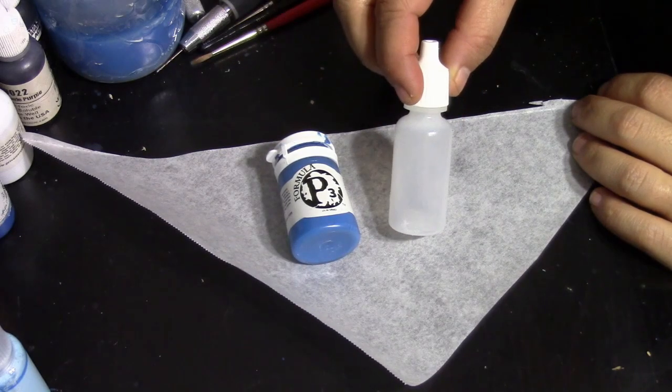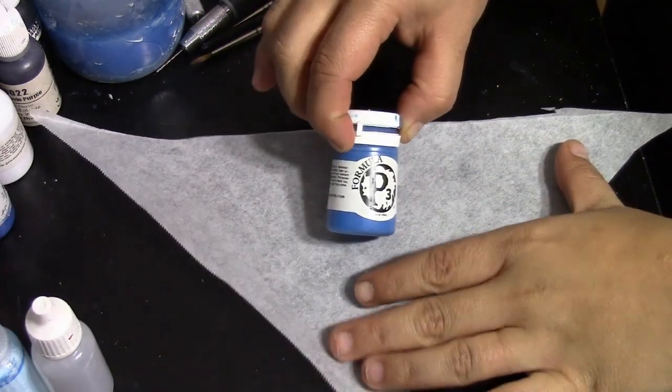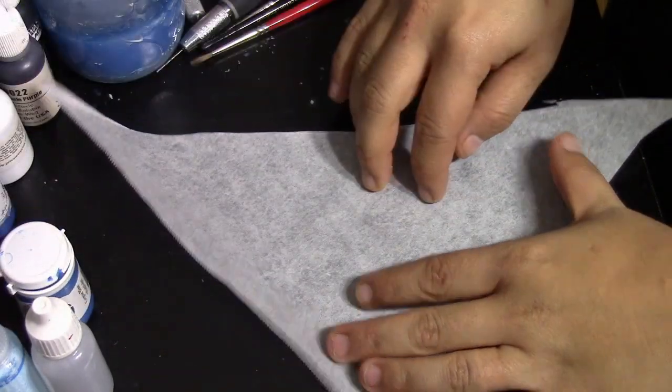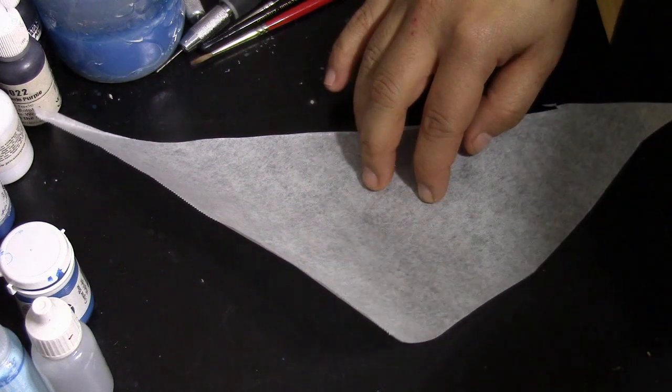You're going to need your paint pot, your paint dropper bottle—this one is a reclaimed one but you can also buy them through various sources online—and some parchment paper or wax paper cut into a triangle.